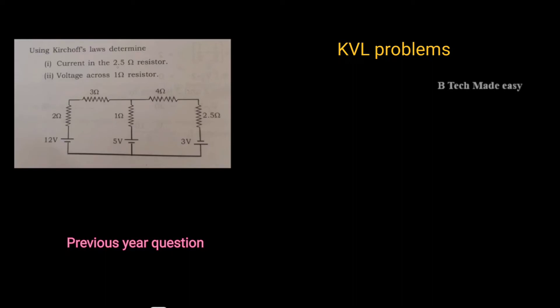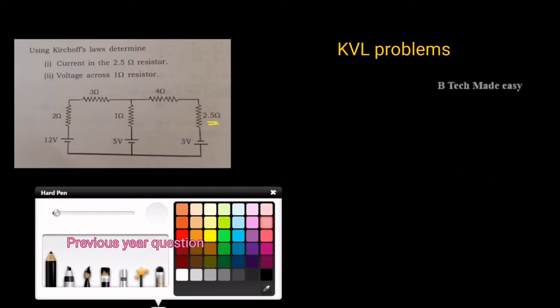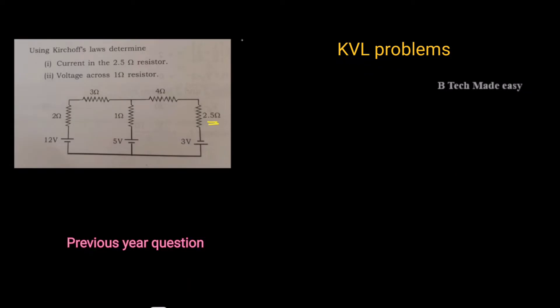This is the 2.5 ohm resistor, and voltage equals the 1 ohm resistor. This is the 1 ohm resistor. We can calculate the voltage in this 1 ohm resistor. This is the circuit.